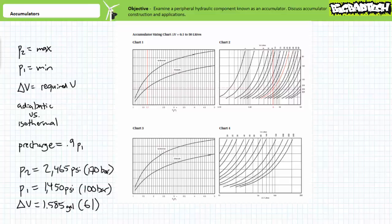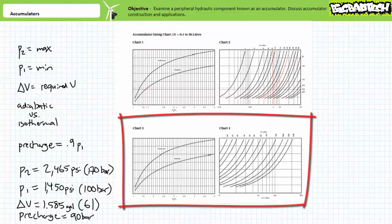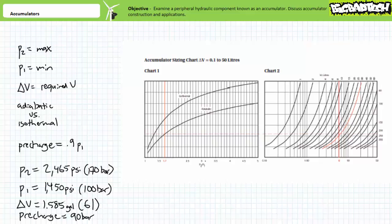For this example, let's assume the maximum pressure, P2, is 2465 psi, or 170 bar. The minimum pressure, P1, is 1450 psi, or 100 bar. The required volume, delta V, is 1.585 gallons, or 6 liters, and the process will be adiabatic. This process would necessitate the accumulator be pre-charged to 90 bar. Next, the process necessitates we choose which set of curves to utilize based off the required volume. This series of piston accumulators makes use of four charts. Required volumes of 0.1 to 50 liters would use charts 1 and 2. Required volumes of above 50 liters would use charts 3 and 4. For our particular application, 6 liters, we would use charts 1 and 2. Next, the sizing process requires us to determine the ratio of P2 over P1. In this case, it's 1.7.